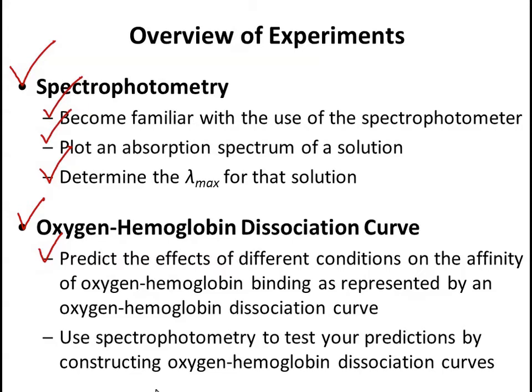Keep in mind that those experimental treatments are going to be reflective of in vivo physiologic changes. And finally, to test your predictions and to construct your curves, you'll use a spectrophotometry method. On the next slide, we'll talk about how and why we can use spectrophotometry to quantify oxygen hemoglobin binding.